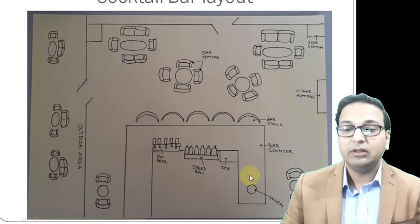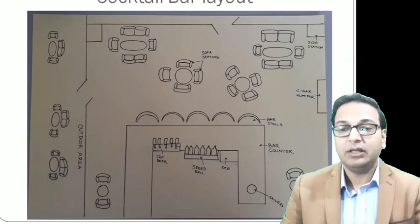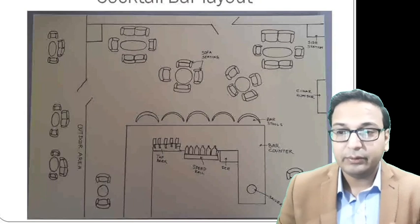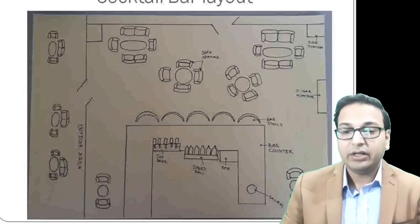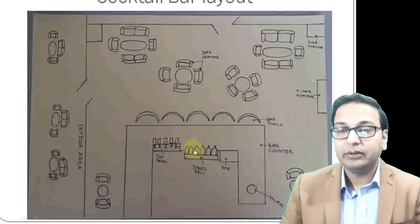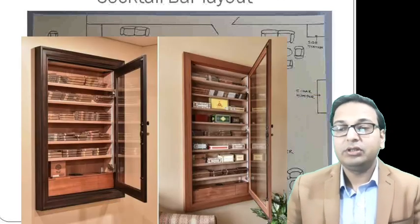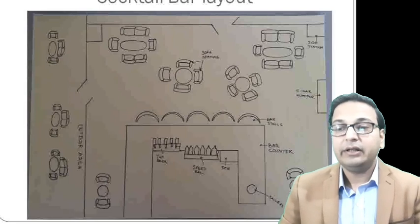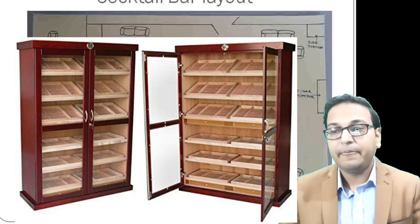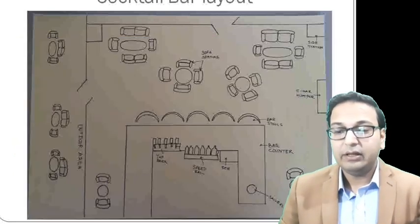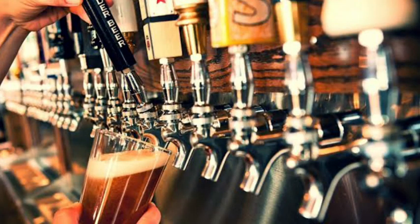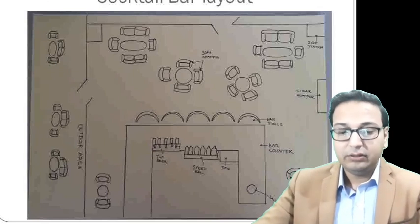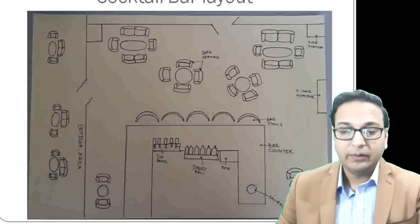The cocktail bar is a full-fledged bar where different types of classic cocktails are made. Guests come primarily for drinks — food is secondary. The layout features sofa seating inside and outside, and a cigar humidor, which maintains a certain level of humidity to keep cigars fresh. Inside the bar counter is a speed rail where immediately used drinks for making cocktails are kept, along with beer taps for draft beer. That concludes today's lecture — any questions can be written in the comments below.